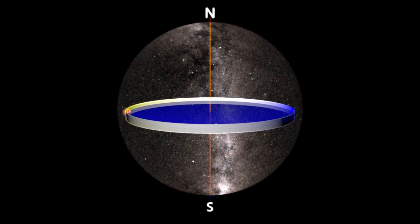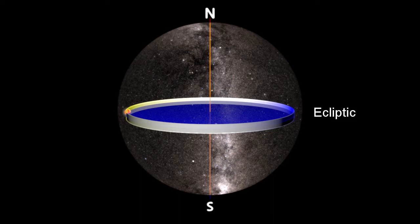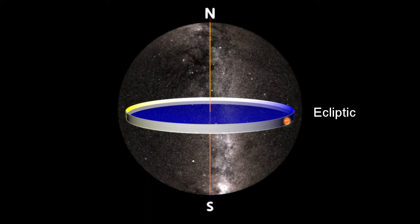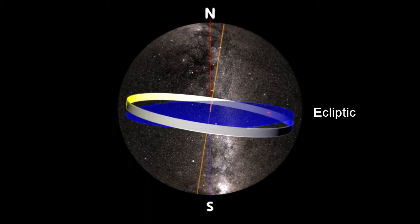This great circle is referred to as the ecliptic, the reason being that when the moon coincides exactly with the path of the sun, an eclipse occurs. The sun's complete circuit around the ecliptic is that by which man has always measured a full year, and it is inclined from the celestial equator by approximately 23 degrees.